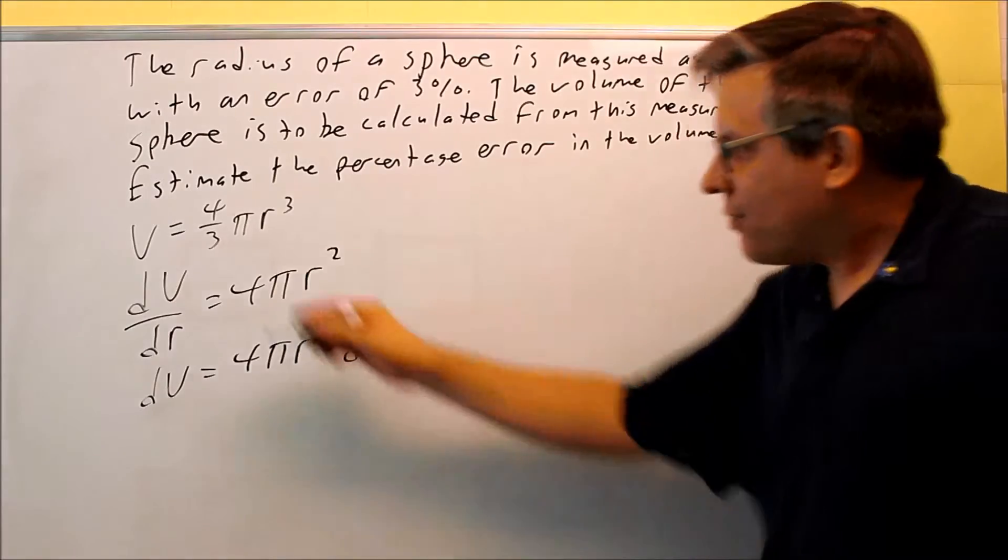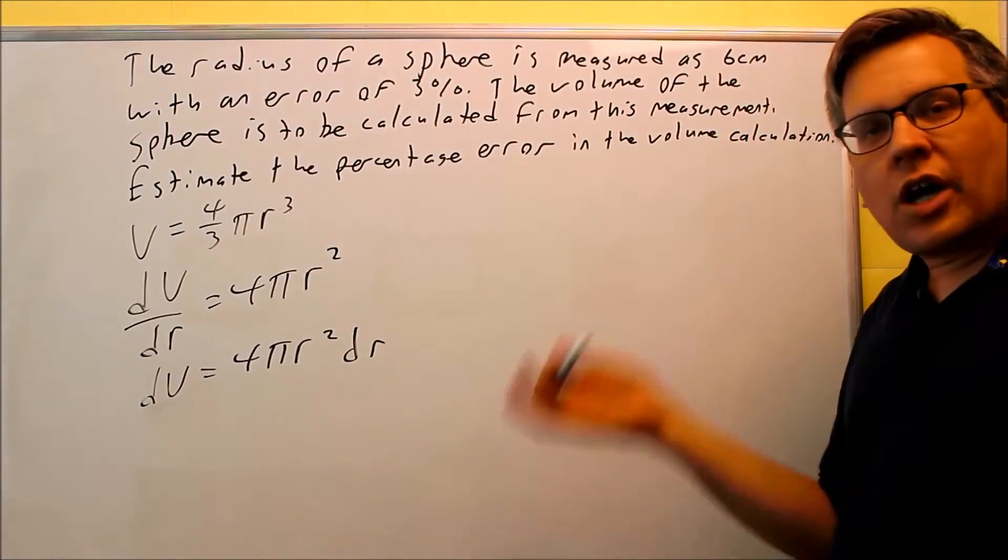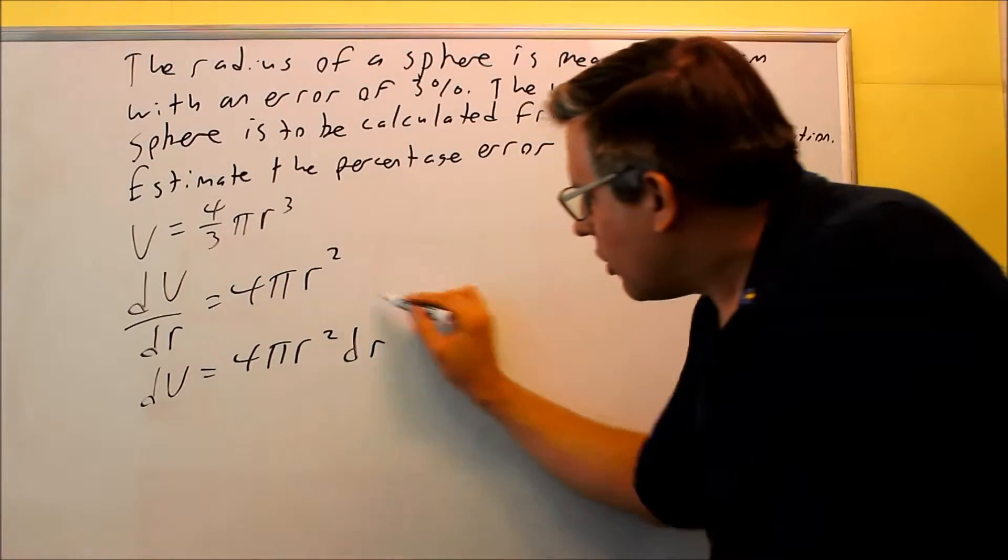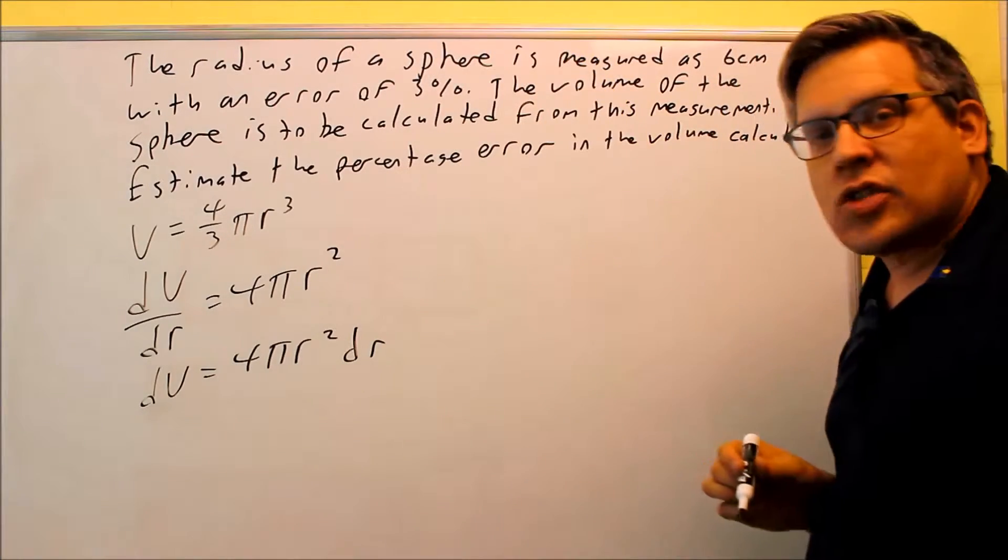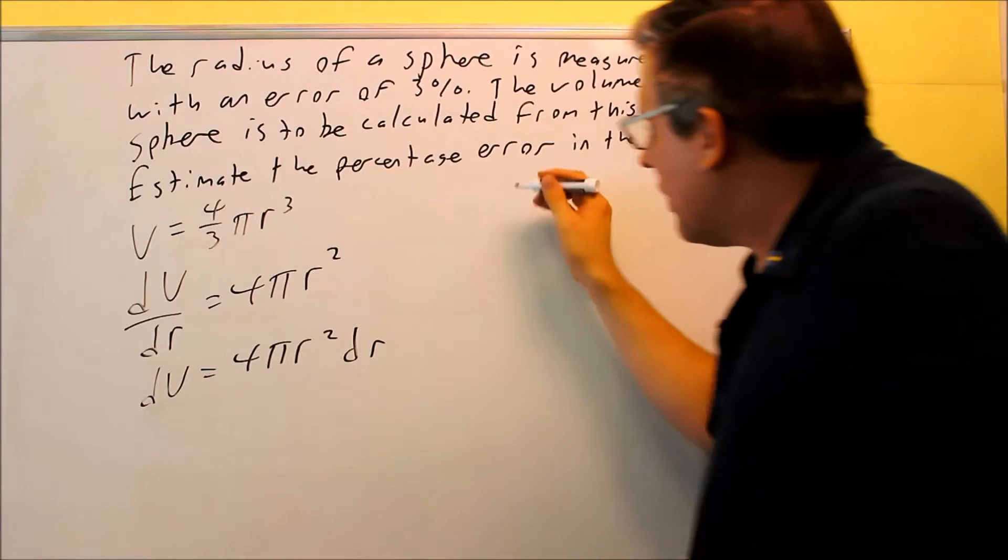Now, why are we using a derivative on this? Because we've got to get a differential out of it. We need to know what dr is because we're going to calculate that dr based off of the 3%.